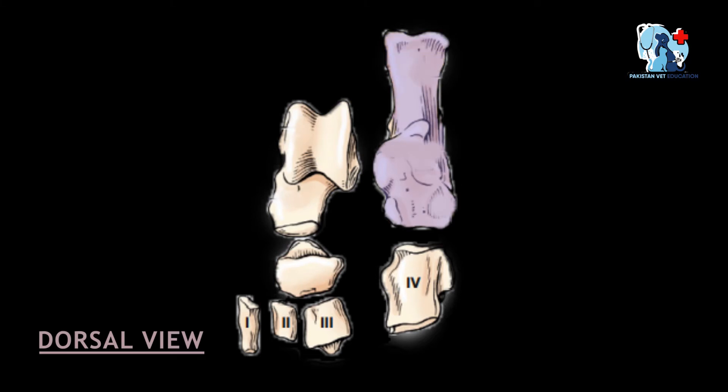The second bone of the proximal row is the calcaneus bone. Its articulation is: medially it articulates with the talus bone, and distally with the fourth tarsal bone. The tuber of the calcaneus bone projects proximally and caudally, and is called the tuber calcaneae.